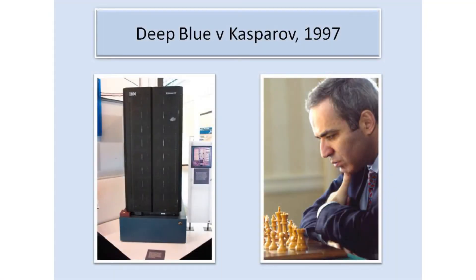Was it Deep Blue's sheer computational power that beat Kasparov? A recent book by Nate Silver gives a rather interesting account of the match. In the first game, Kasparov had gained a winning advantage. On Deep Blue's 44th move, it had an opportunity to prolong the game but instead played a rather poor move, which made it easy for Kasparov to exploit his advantage. Kasparov was puzzled — how had such a powerful computer made such a mistake? He deduced that the computer must have been capable of looking so far ahead that it could see the apparently better move would still lead to defeat, and so had chosen the other move to make the game last longer.